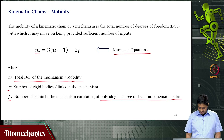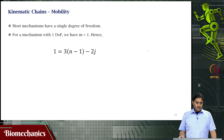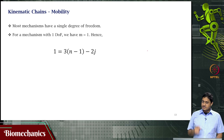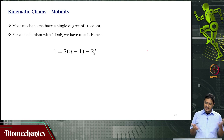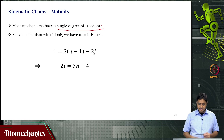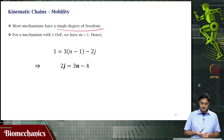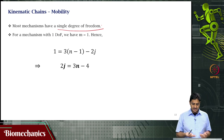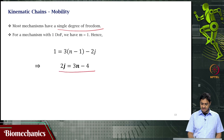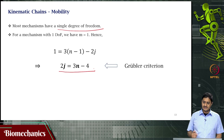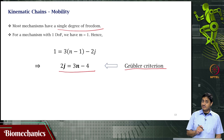For a mechanism with one degree of freedom — that is, mobility M = 1 — substituting into Kutzbach's equation gives: 2J = 3N − 4. So the number of joints and the number of links are related to each other in this way. This criterion is also called Grubler's Criterion, where J still refers to the number of joints with single degree-of-freedom kinematic pairs.